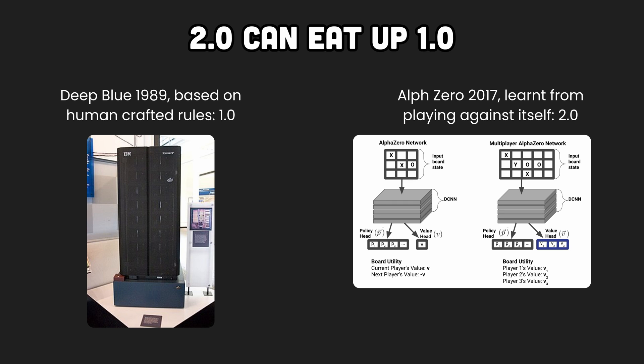Another illustrative example is AI beating humans at Go or chess. Early systems involved a lot of 1.0 code describing complex human-crafted rules. 2.0 solutions like AlphaZero are purely trained from data and their decisions are mostly based on the output of neural networks.